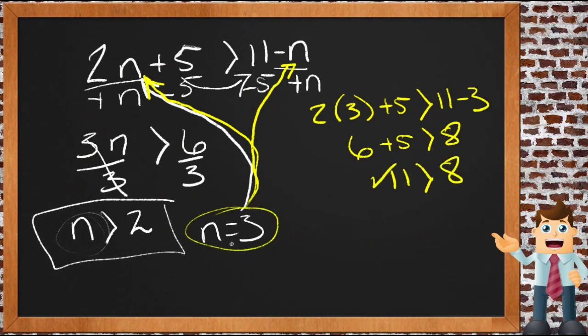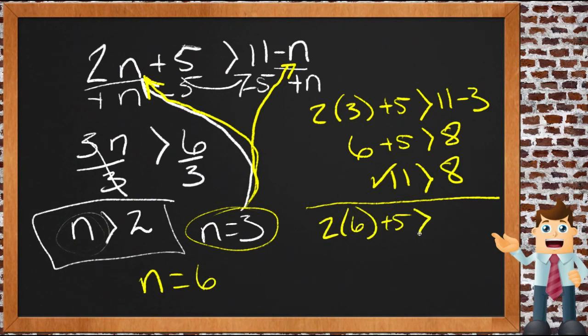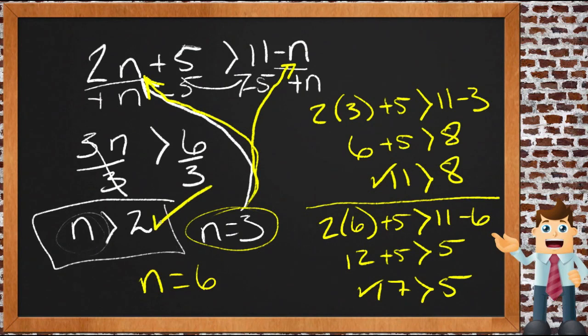So this answer appears to work. We can try one more just to be sure. But since we picked one that was just barely above 2 and it worked, chances are anything higher than that probably will. Let's try n equals 6. Then we'd have 2 times 6 plus 5 is greater than 11 minus 6, which is 5. 12 plus 5 is 17, and 17 is greater than 5. Yep, that works.